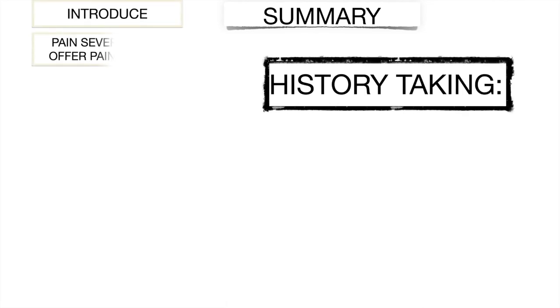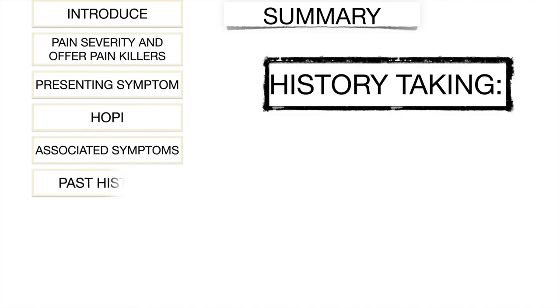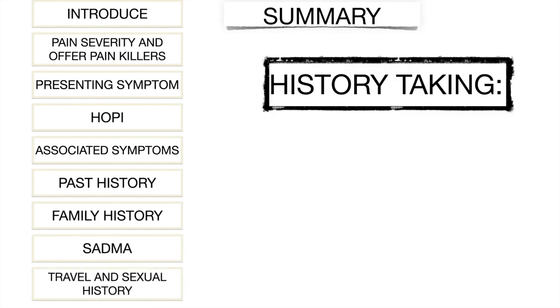To summarize: for medicine and surgery cases with history taking as the task, start by introducing yourself. When the chief complaint is pain, assess severity and offer painkillers first. Then take the full history of presenting illness using SOCRATES. Ask associated symptoms and system-based questions, followed by past history, family history, SATMA questions, and — depending on the case — travel and sexual history. Then move on to PFI.